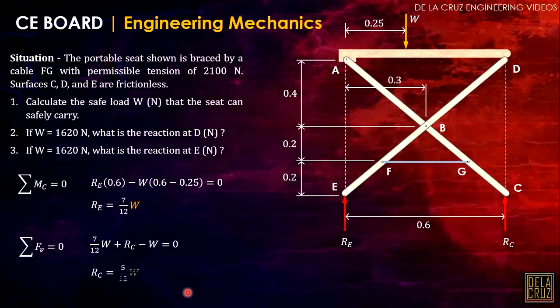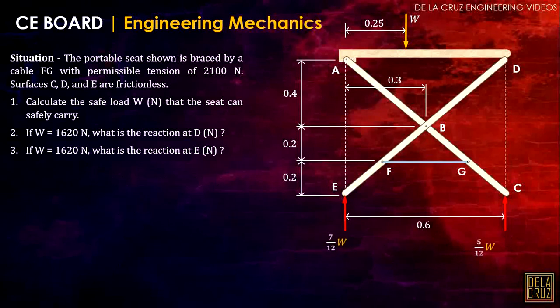And of course, it will result to 5 over 12 of W, the complementary of RE. Now for question number one, calculate the safe load W. There are two options to solve this: we can consider this segment here or this member, the member ABC or the member DBE. It's up to you.